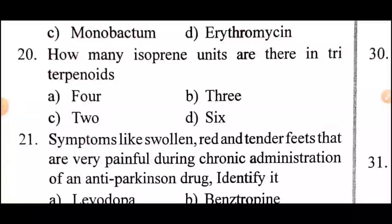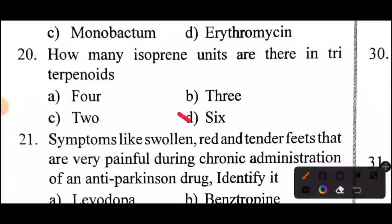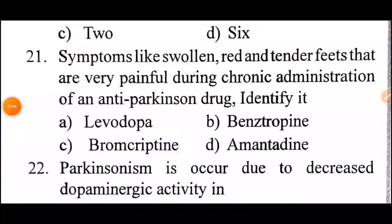Question: how many isoprene units are there in triterpenoids? Answer: 6.